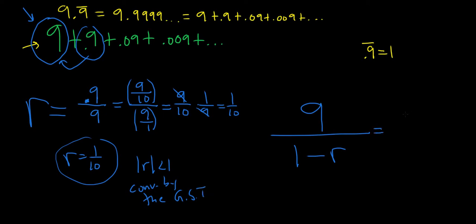So this is equal to 9 over 1 minus, and then r was 1 tenth. This is equal to 9 over, so we can think of 1 as 10 tenths. So 10 tenths minus 1 tenth. And we do that so we can actually perform the subtraction. So this is 9 over 10 tenths minus 1 tenths is 9 tenths.